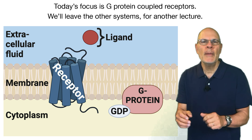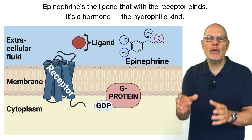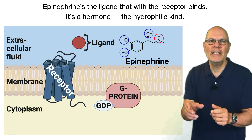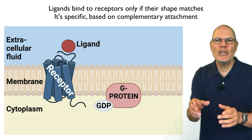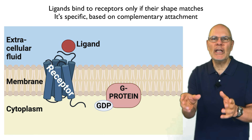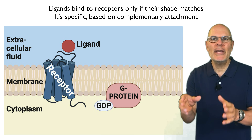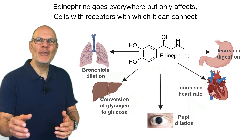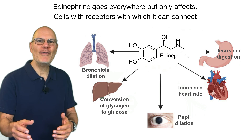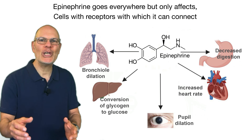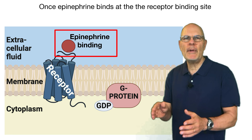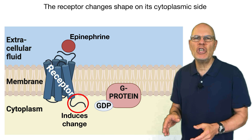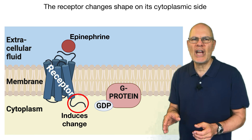Epinephrine is the ligand that binds with the receptor. It's a hormone — the hydrophilic kind. Ligands bind to receptors only if the shape matches — it's specific, based on complementary attachment. Epinephrine goes everywhere, but only affects cells with receptors with which it can connect.